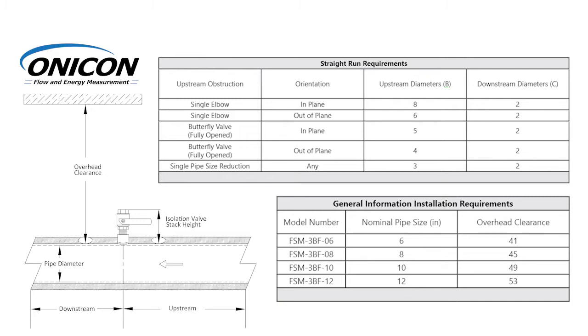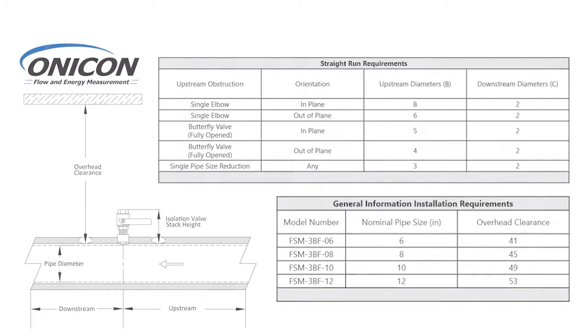Straight run requirements vary dependent upon upstream obstructions, overhead clearance varies based on the size of the meter and is important for installation and removal, and the location should be accessible for personnel to perform periodic maintenance. Please be sure to follow the guidelines outlined here in your manual for location selection.